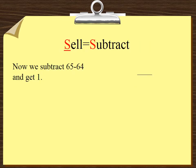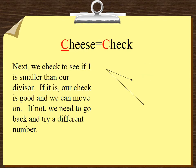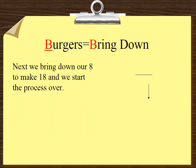Sell equals subtract. Now we subtract 65 from 64, and we get 1. Cheese equals check. Next we check to see if 1 is smaller than our divisor. If it is, our check is good, and we can move on. If not, we need to go back and try a different number. Our check is good.